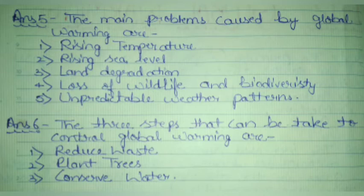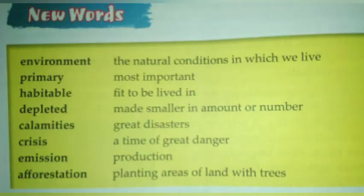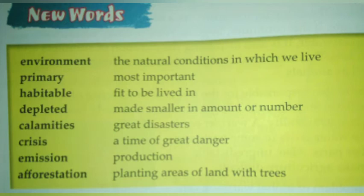Word meanings: Environment — the natural condition in which we live. Primary — most important. Habitable — fit to be lived in. Depleted — made smaller in amount or number. Calamities — great disasters. Crisis — a time of great danger. Emission — production.